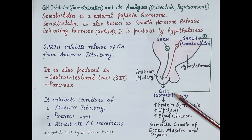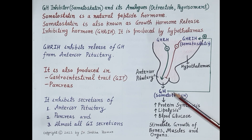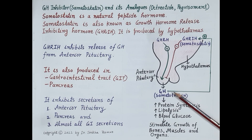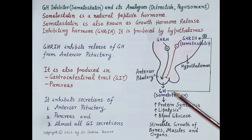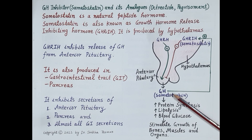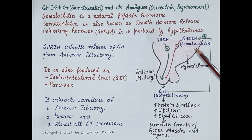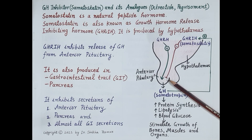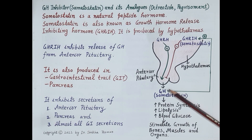Excess synthesis and secretion of growth hormone is not desirable. Excess secretion can produce gigantism in children, where a child can grow up to a height of 8 feet, and acromegaly in adults, where bones become abnormally thick. Adults with acromegaly are characterized by a large lower jaw and large hands and feet. Whenever blood levels of growth hormone rise above normal, the hypothalamus releases GHRIH to inhibit growth hormone secretion and bring levels back to normal.